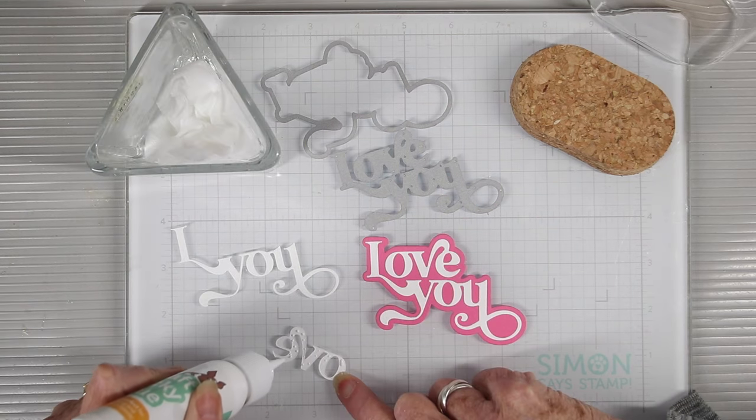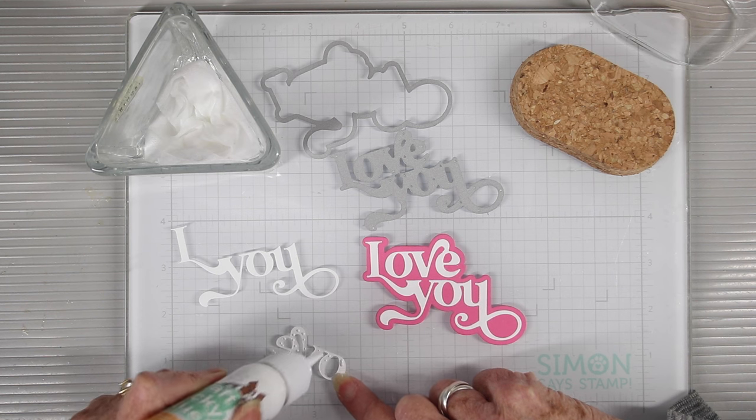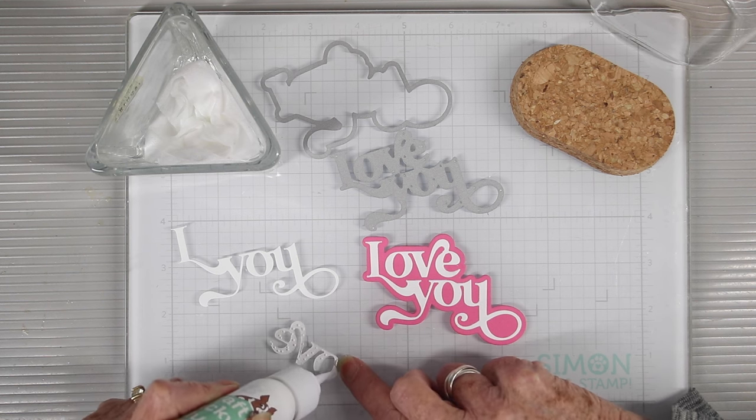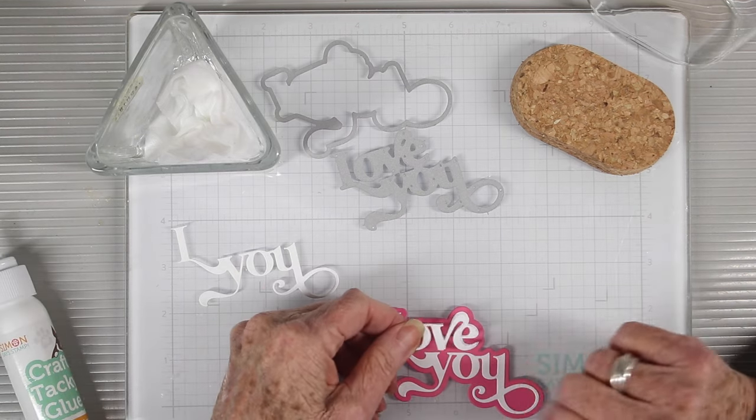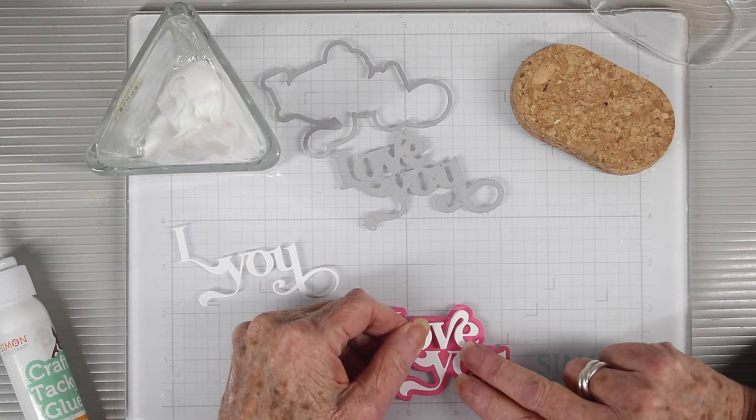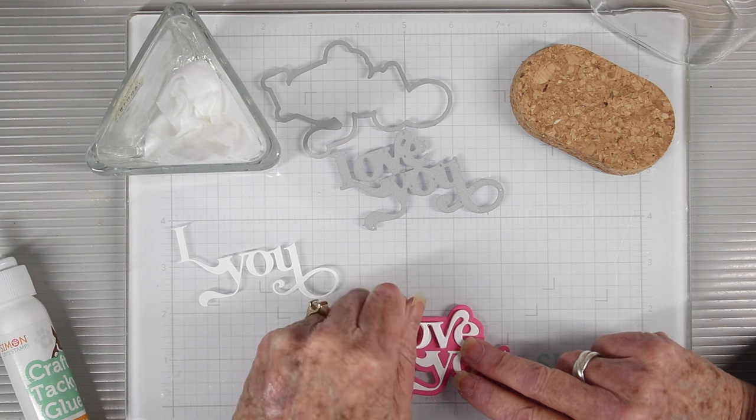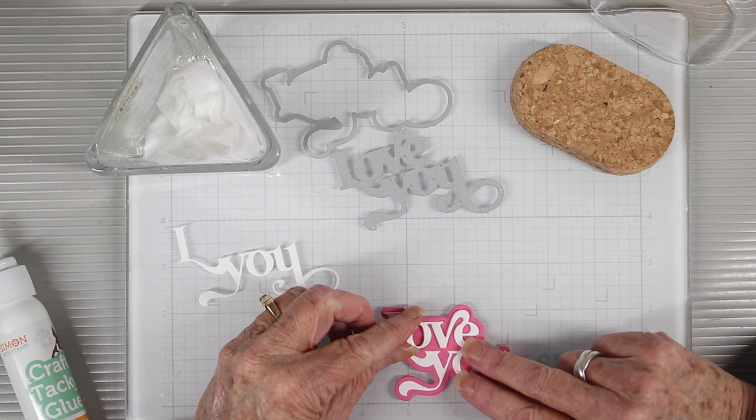And to adhere these two layers together, I'm using my SimonSaysStamp craft tacky glue. I'm just adding small dots of glue to the back, and then I can place this right on top of the first layer and make sure I have everything lined up before the glue dries.